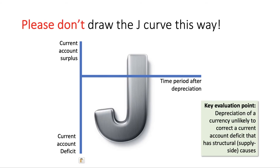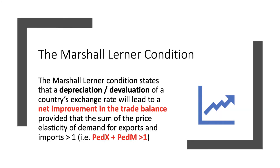Above the dotted line represents a net improvement in the trade balance. Please don't draw the J-curve showing a move from a big current account deficit to a surplus — that is highly unlikely, because the deficit itself often has underlying supply-side causes that aren't much affected by a change in the exchange rate. The Marshall-Lerner condition is a great condition to state in an economics exam. It says that a depreciation or devaluation of the exchange rate will lead to a net improvement in the trade balance, provided that the sum of the price elasticity of demand for exports and the price elasticity of demand for imports is greater than one.